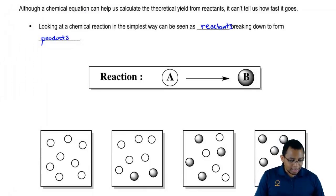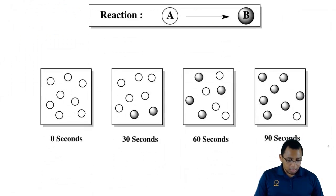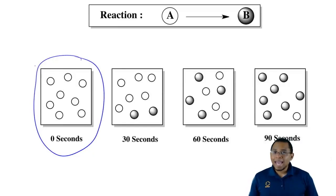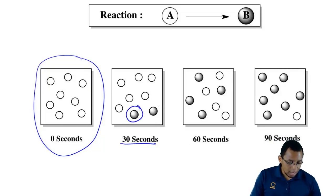If we take a look at the time elapsed, when we start out at zero seconds, initially all we have are the white balls. Those are A. In the beginning, before a reaction is even allowed to start, we have only reactants. Over time, what begins to happen? You're going to get more and more of compound B, our product, forming.